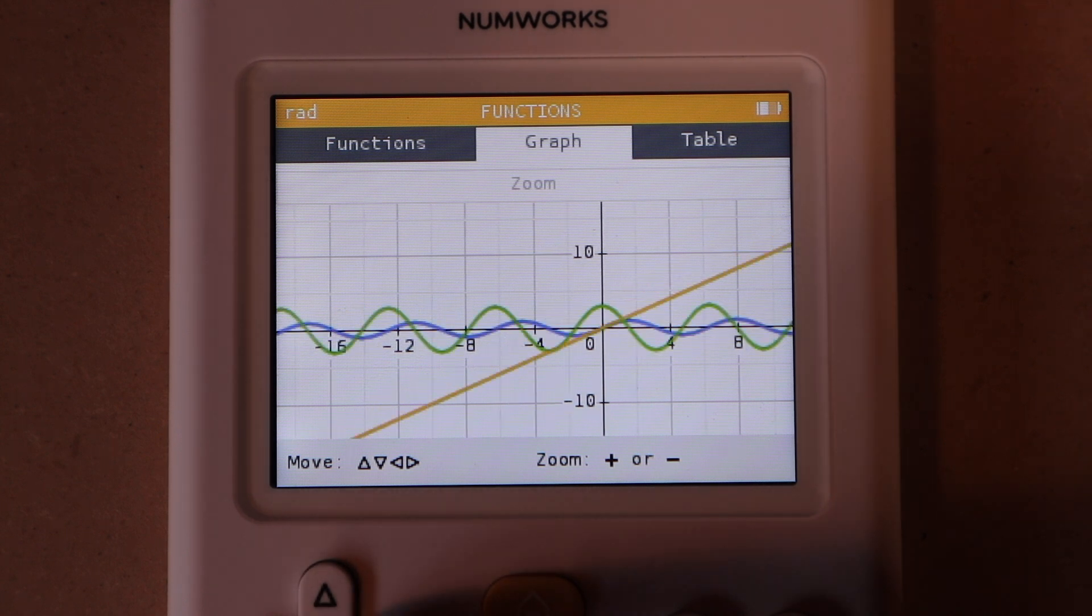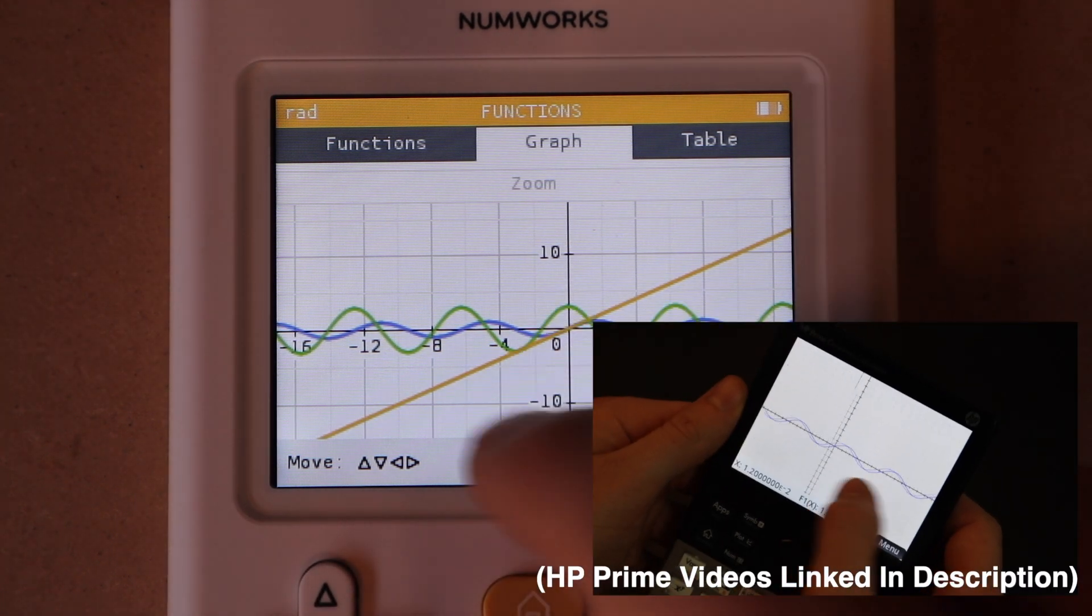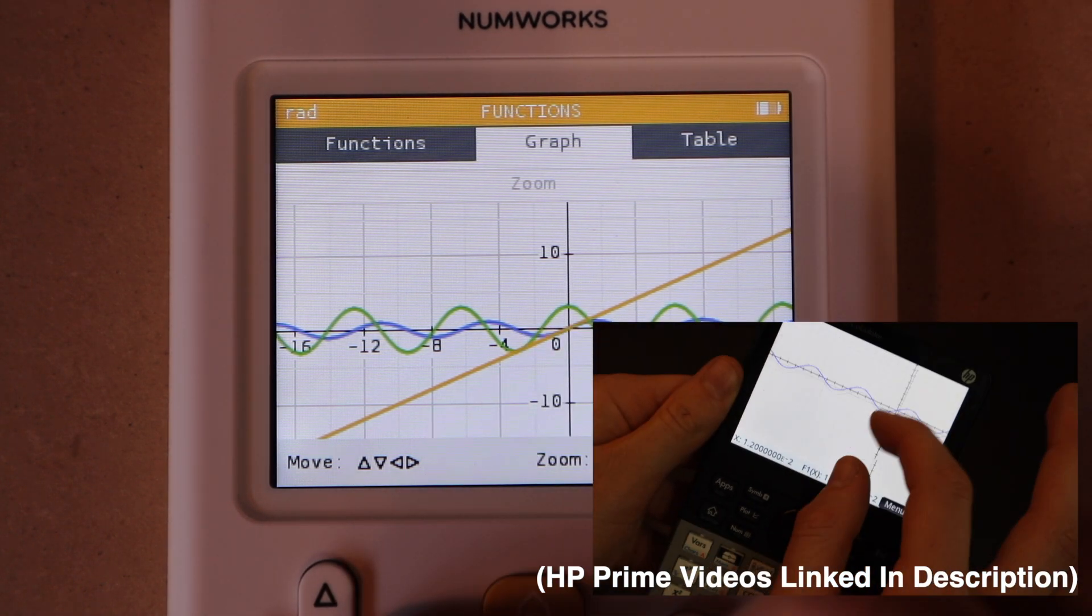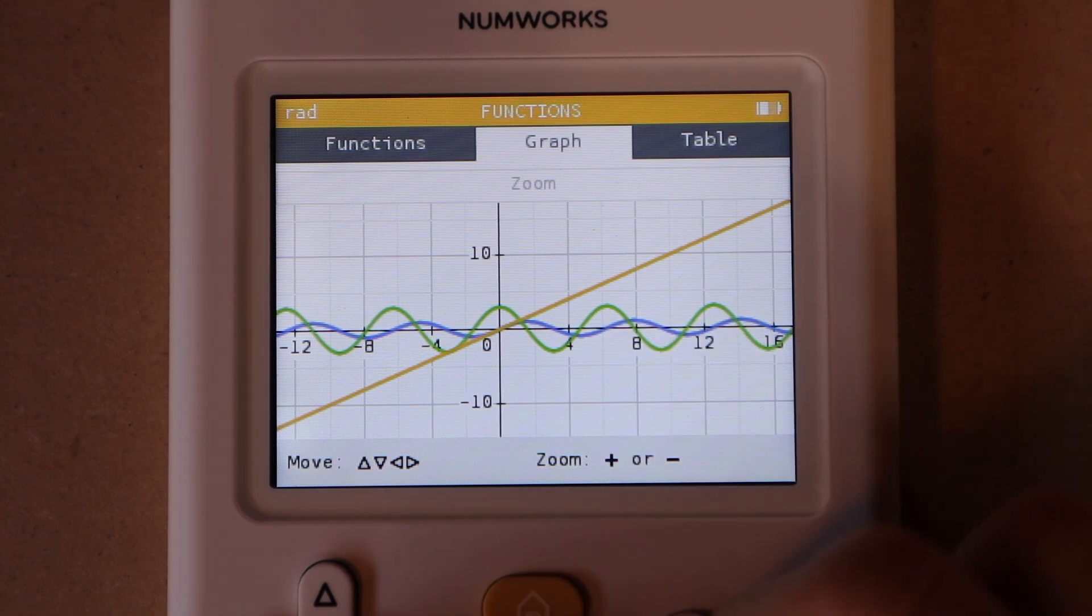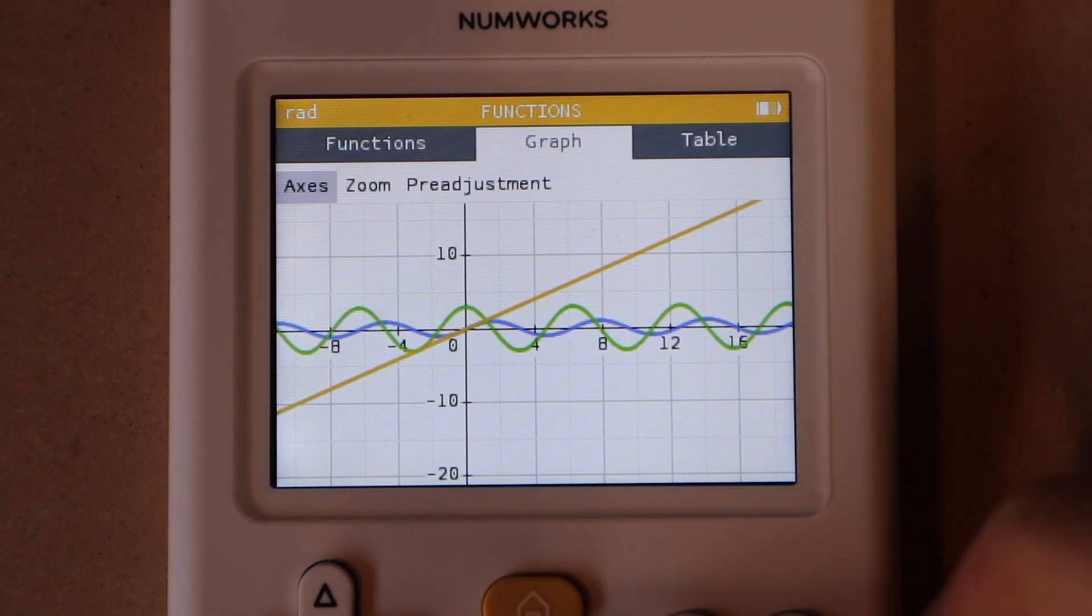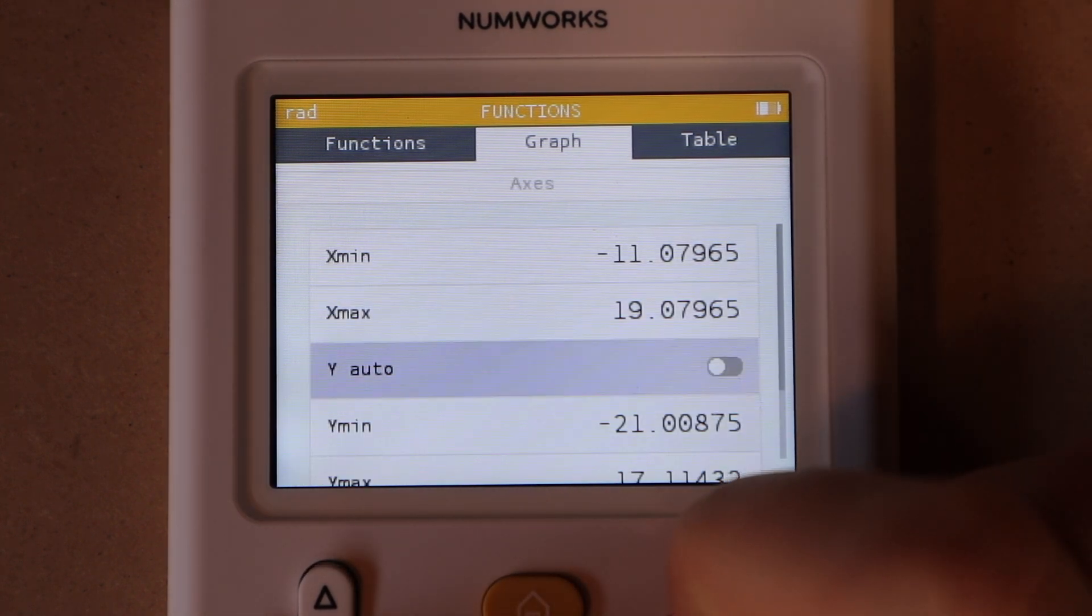You can see here every time I click the arrow you have to wait for it to update the screen and redraw the functions. This is the case on a lot of graphing calculators, but some like the HP Prime work more like Google Maps on your phone where it doesn't have to update every time you scroll to the left or right or zoom in and out. But other than that it works quite well, and of course if you want you can always manually set the upper and lower limits for the x and y axes.